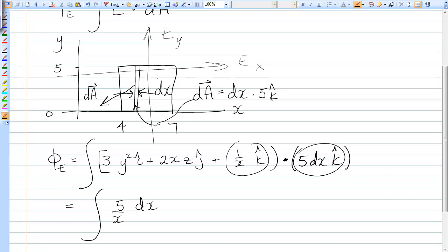And the limits of integration for x are from 4 to 7. So this equals 5 ln x from 4 to 7, or 5 ln(7/4). And that's the final answer.